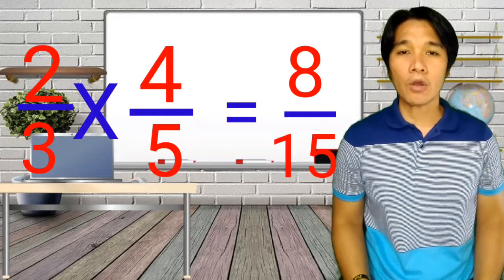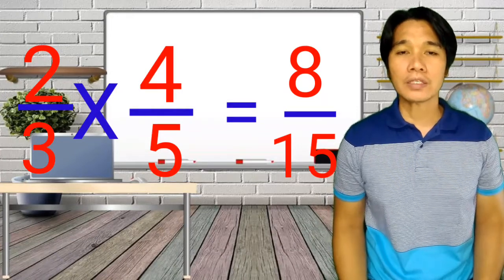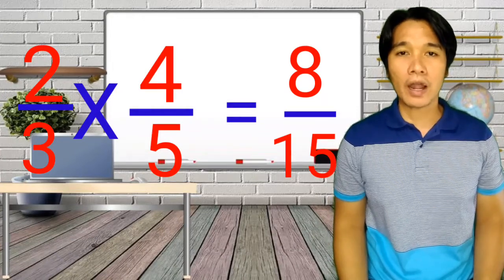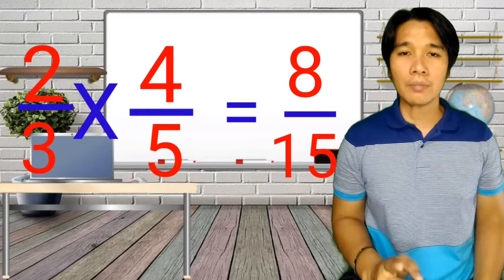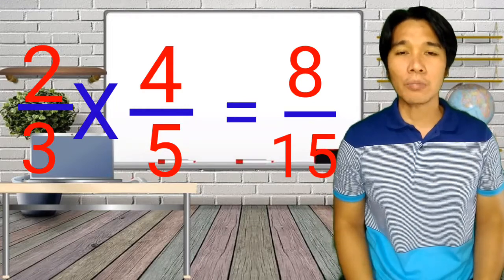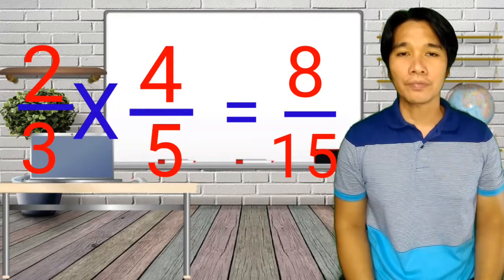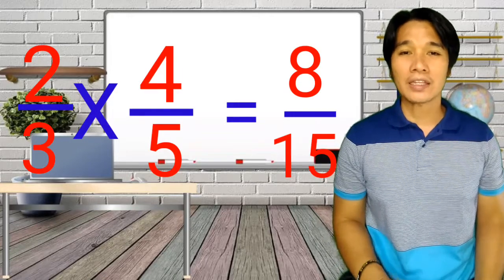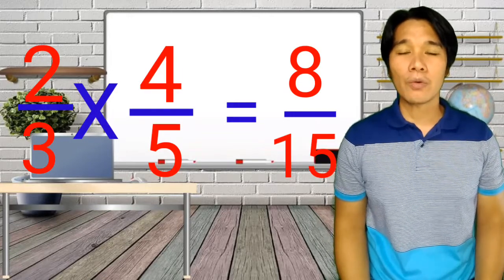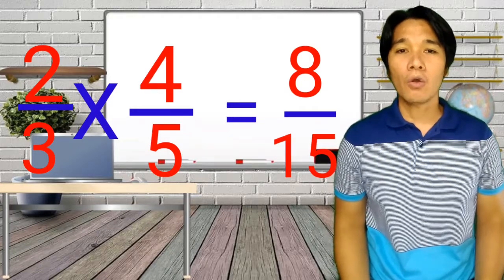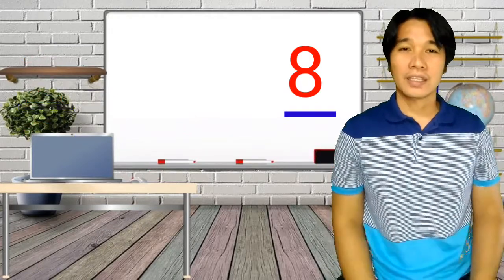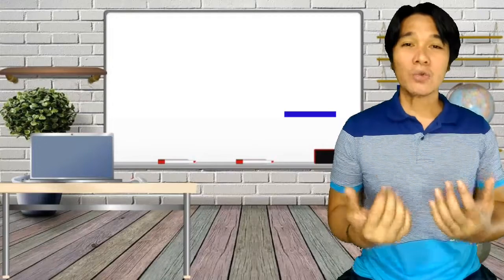Now, our answer is 8 over 15. So, the second step is we are going to simplify our answer. So, can you think a number that can be divided in both numerator and denominator? Okay, none! So therefore, that is our answer. We have 8 over 15. See how easy that was?